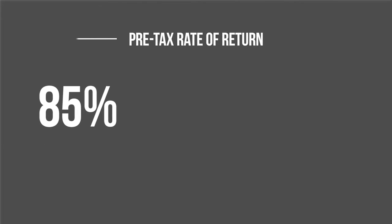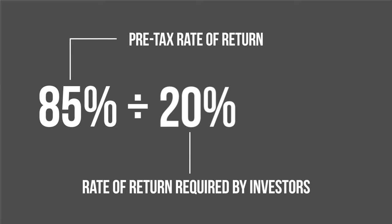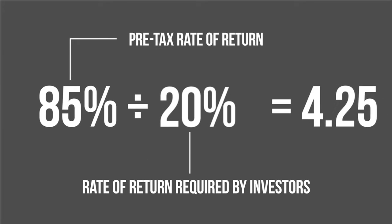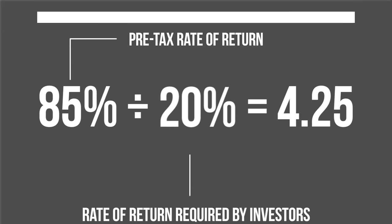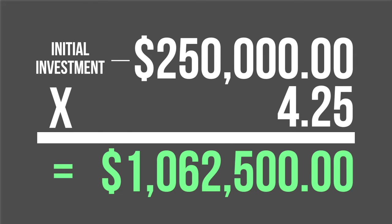That's just calculating 85%, which is the current pre-tax rate of return of the company that you created, and dividing that by the 20% rate of return required by other investors. So you multiply that by your initial $250,000 investment, and you are now worth over a million dollars. Congratulations.